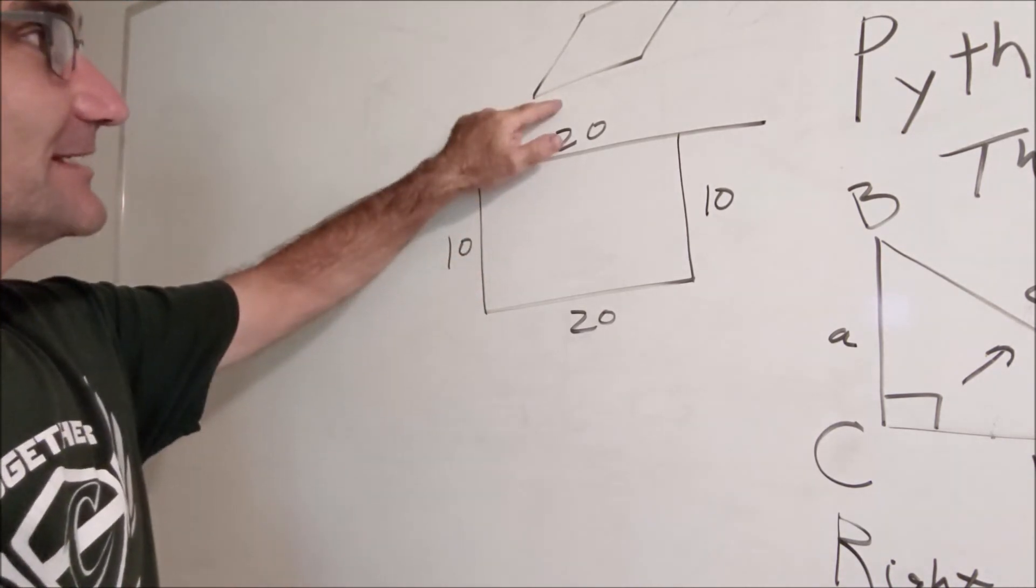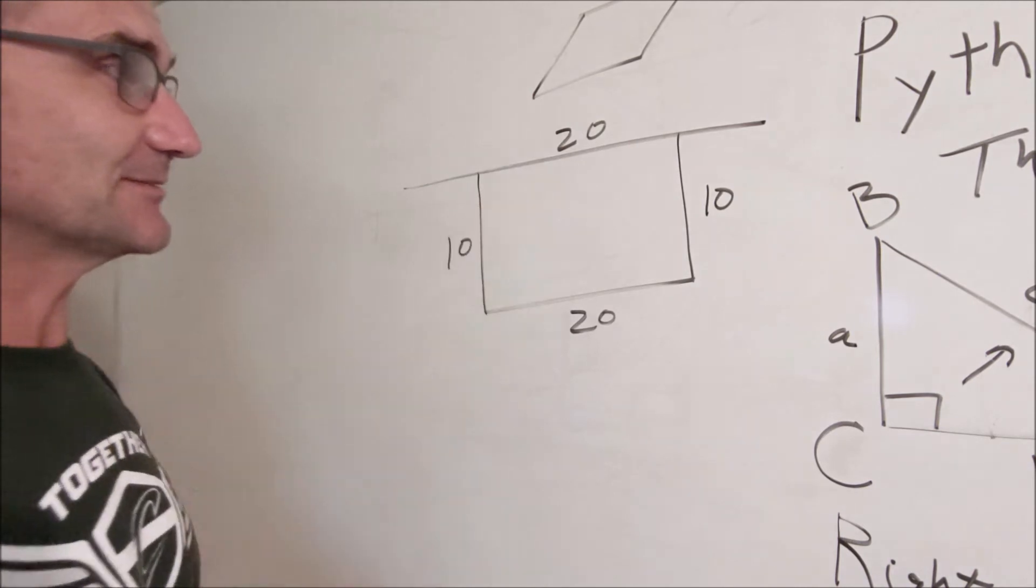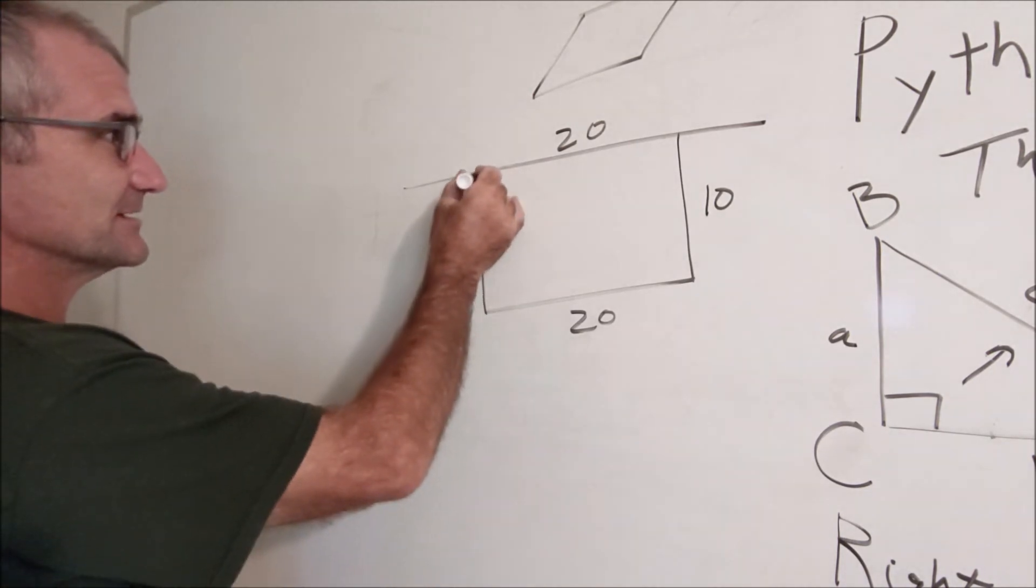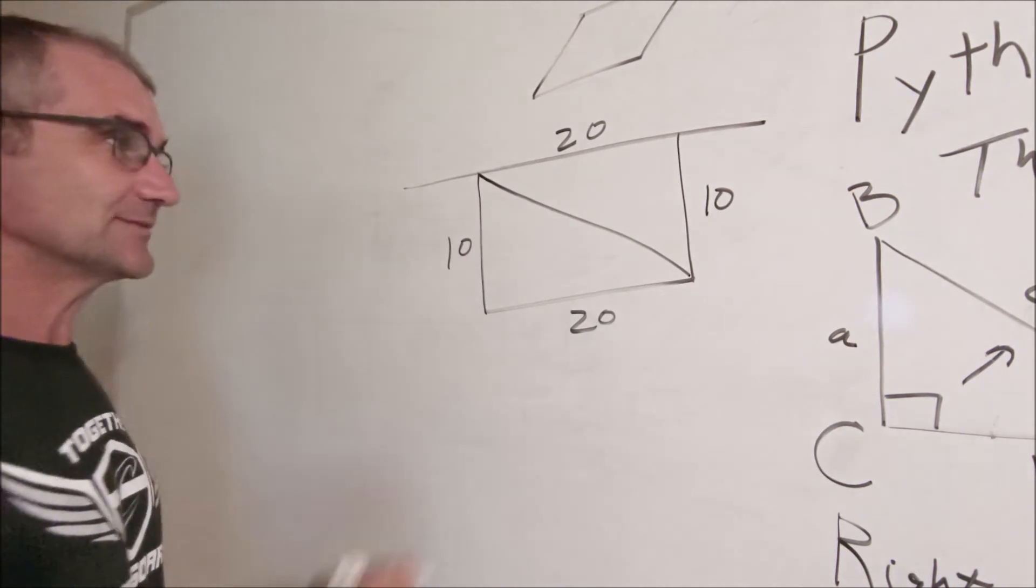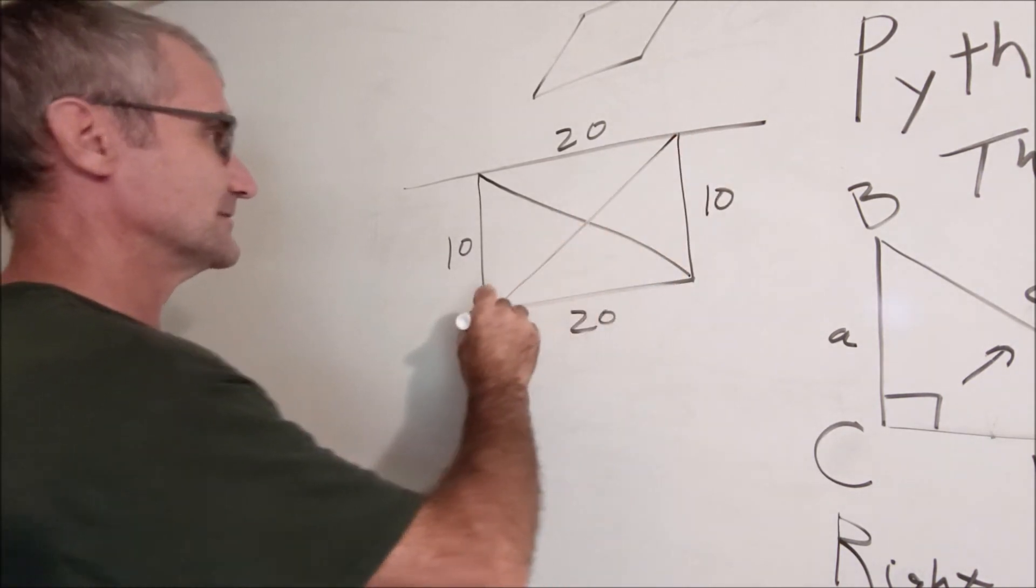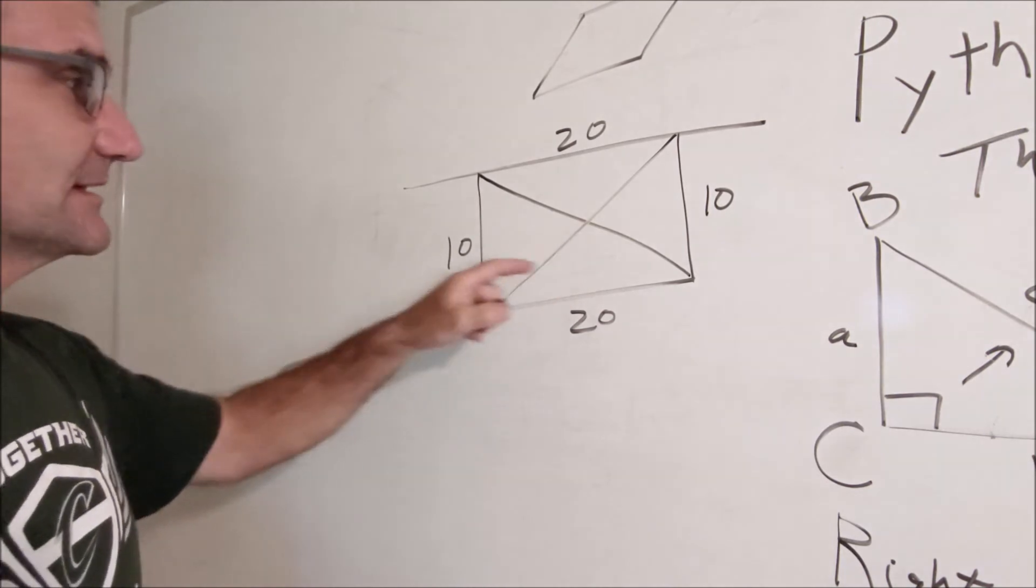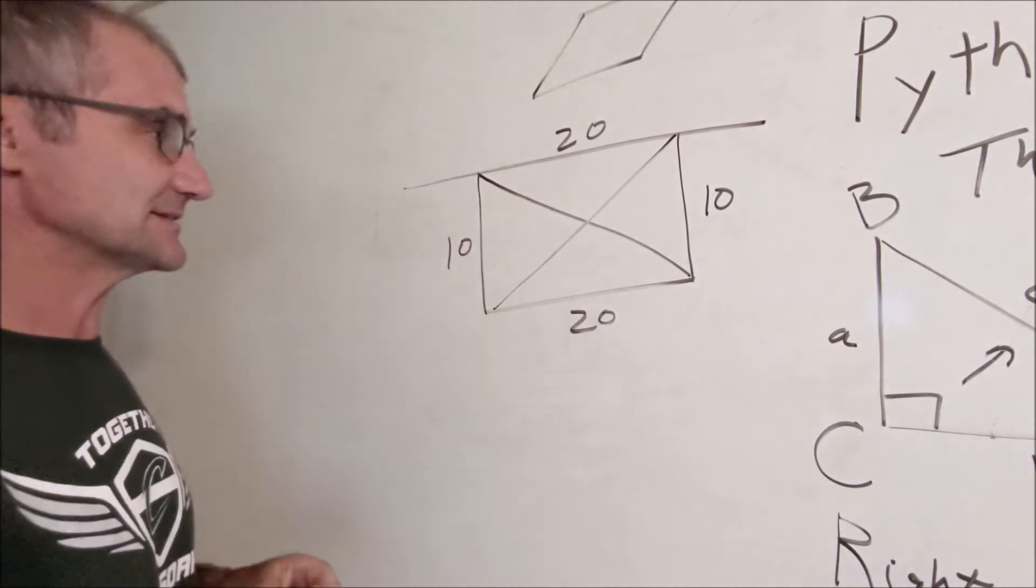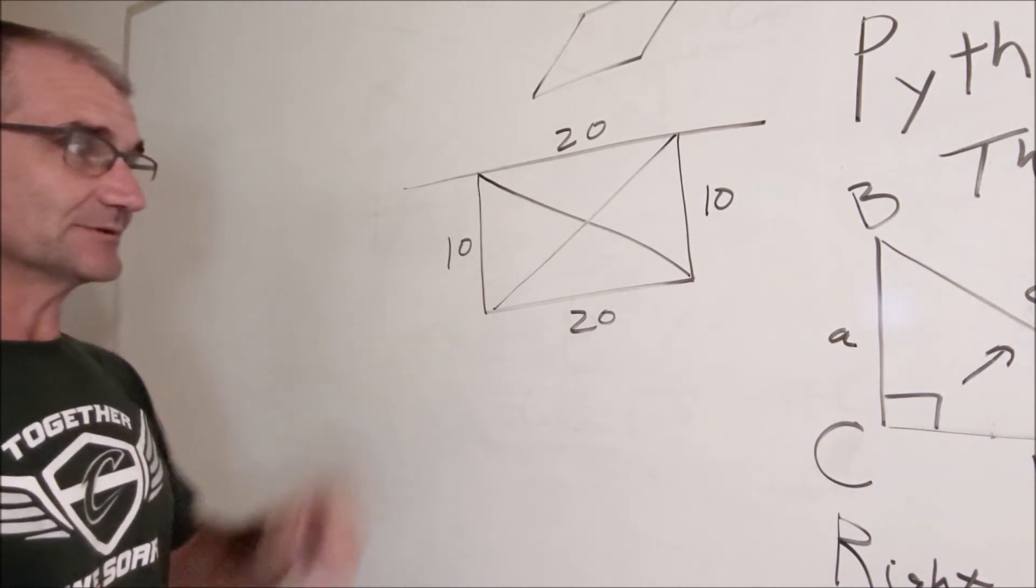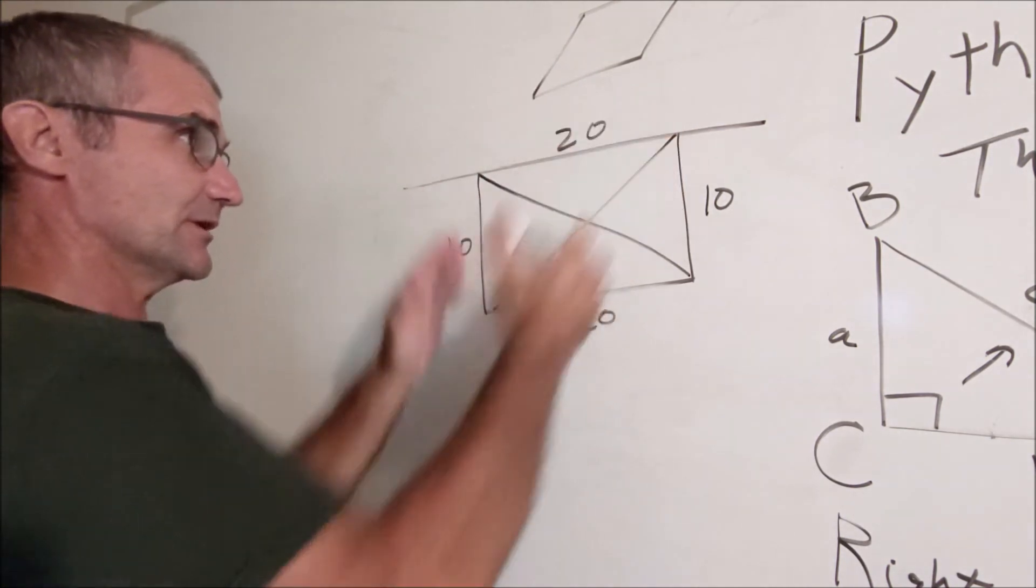So the way I make sure I don't have a parallelogram and I actually have a rectangle is I measure this diagonal and then I measure this diagonal, and if those two diagonals are the same then this has to be right triangle and this has to be right triangle, and that's how I guarantee it's a rectangle square to the wall.